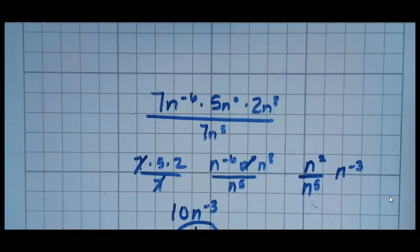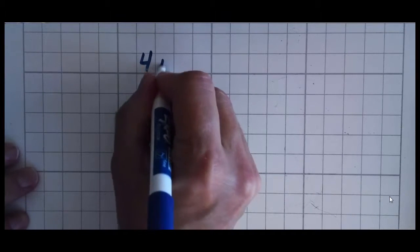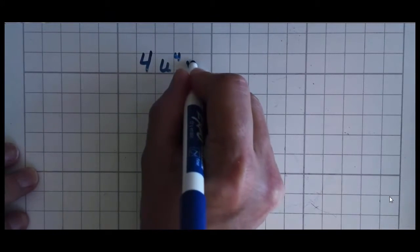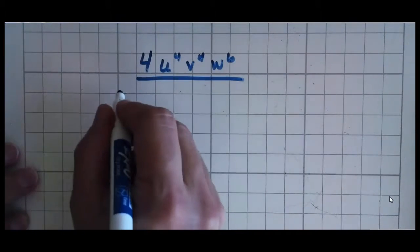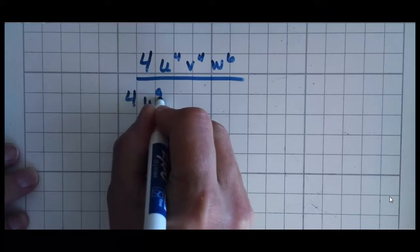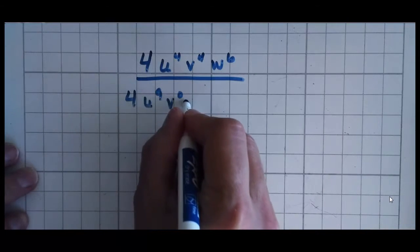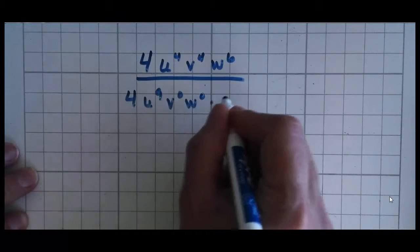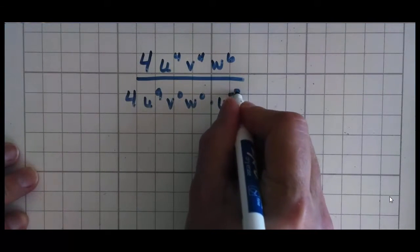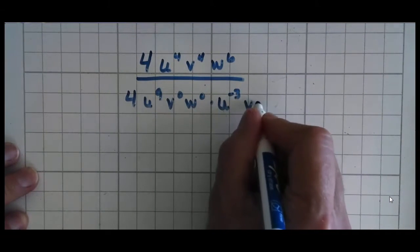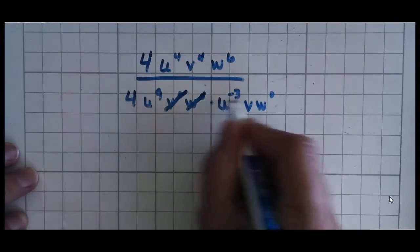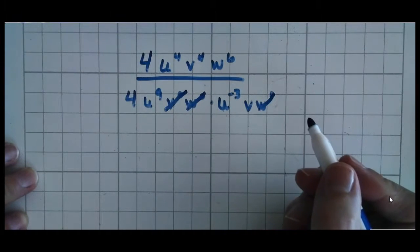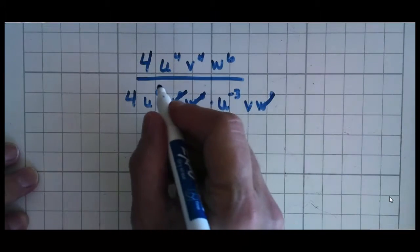Let me turn my page here because I have one more problem I wanted to go over. We have, ready, 4 u to the 4th v to the 4th w to the 6th, over 4 u to the 9th v to the 0 w to the 0, times u to the negative 3rd v and w to the 0 power. The first thing I recommend is just get rid of those 1's to the 0 power because that's a 1. That's a 1. Second thing, look at your numbers. 4 divided by 4 is 1, so I don't need to worry about that.